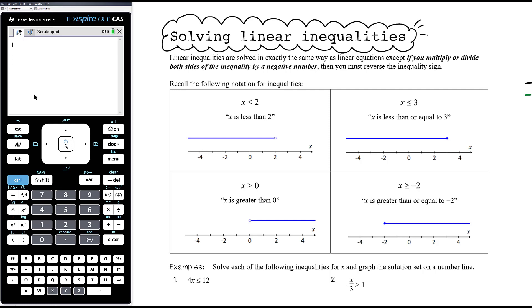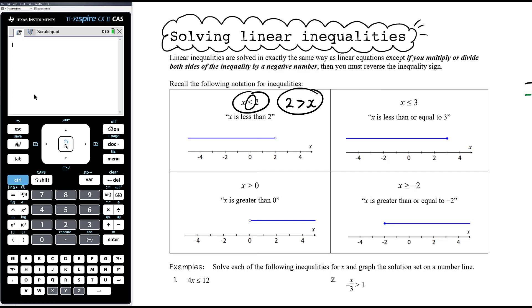Just recalling how we represent inequalities: the smaller end points to the smaller thing. So in the statement x is less than 2, x is the smaller thing. Even if written the other way around — 2 is greater than x — it's still the same statement. They are both the same. People get bogged down in whether it's a greater than or less than sign, but what's important is the smaller end of the sign points to the smaller thing and the bigger end points to the bigger thing. So x less than 2 is the same as 2 greater than x — we're still representing the same information.